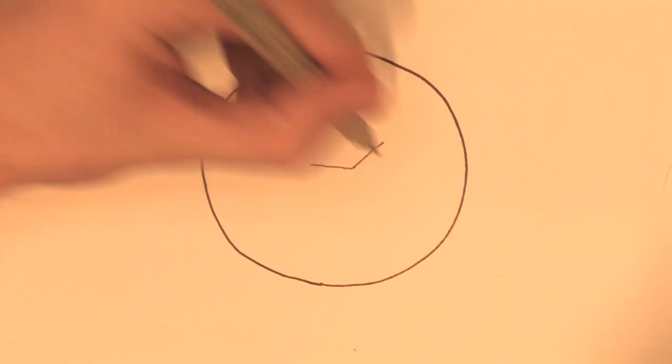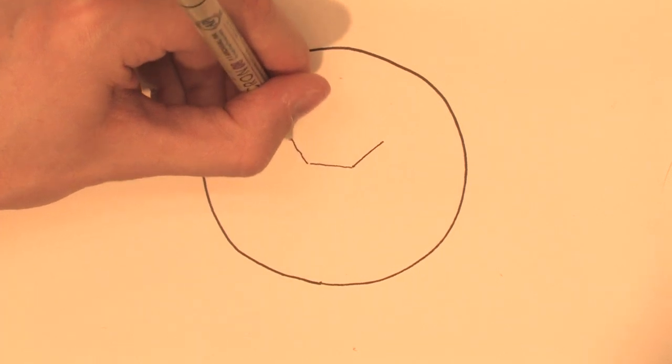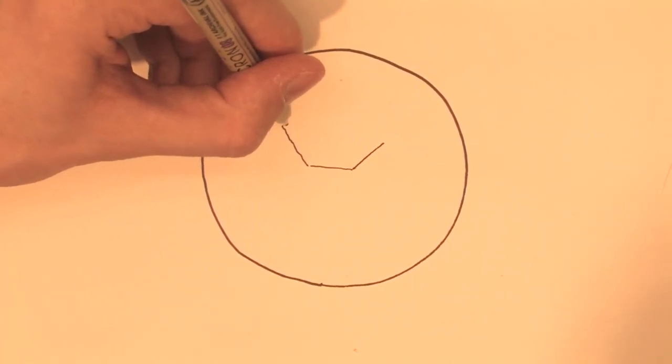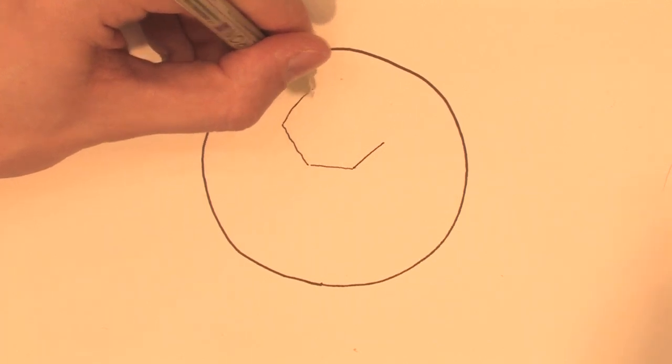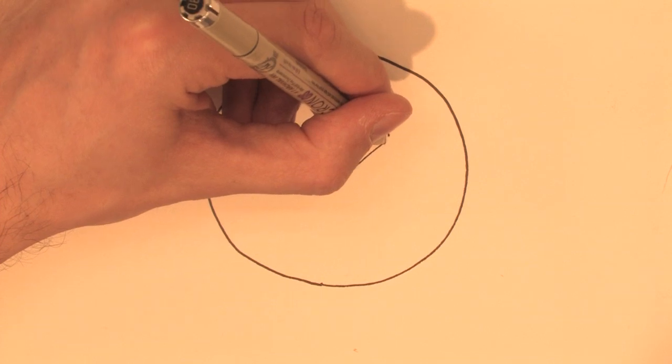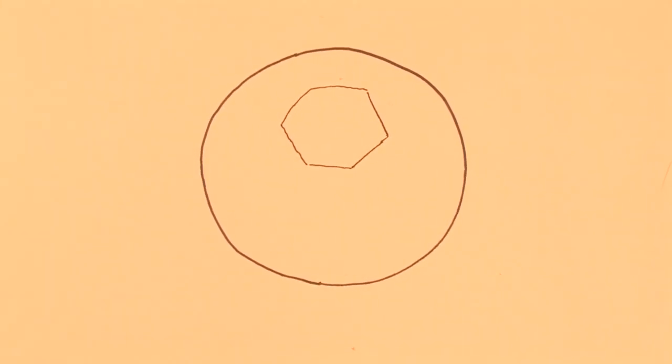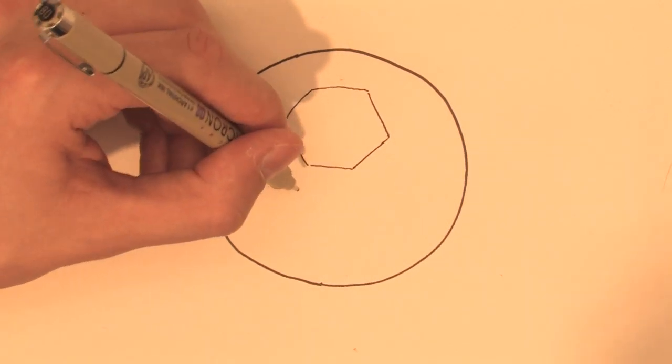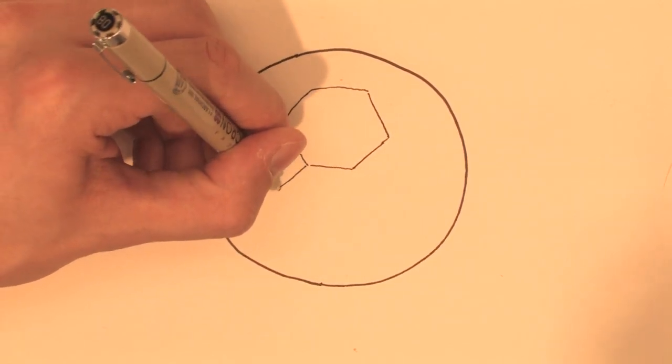we're going to draw a hexagon inside the circle, which we're going to build off of. The soccer ball is full of six-sided hexagons that make up the entire ball.